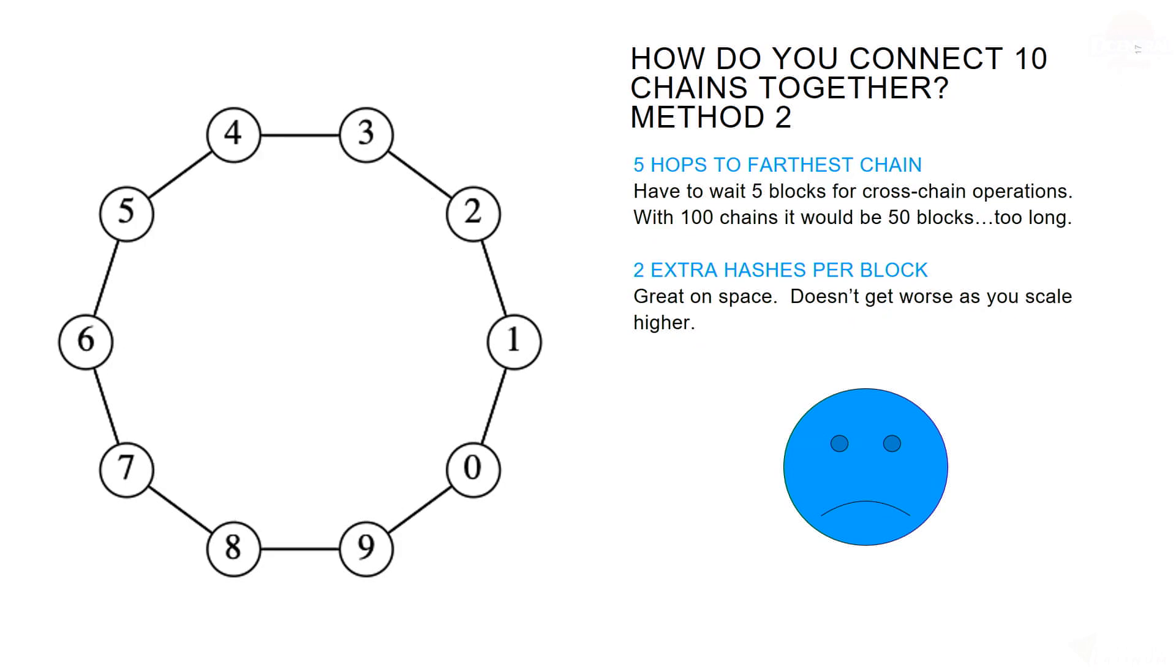We could use a simpler diagram, but this has problems as well. This takes five hops to get to the farthest chain. And if we scaled up to 100 chains, it would be 50 blocks, and that's too long. It is good on the space, though, because there's only two extra hashes per block, and it doesn't get worse as you scale. But it's still not good enough either.